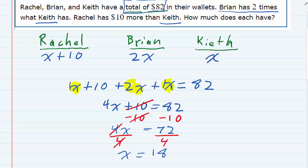However, we have to be careful because we haven't actually answered the question. We know that X is 18, so if I substitute that back in, I do have that Keith has $18, but Brian is 2 times X. So if X is 18, then 2 times 18, Brian actually has $36.